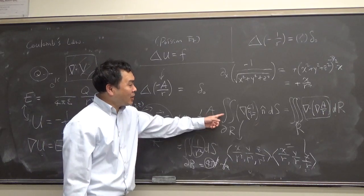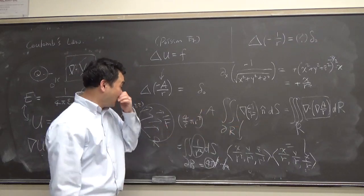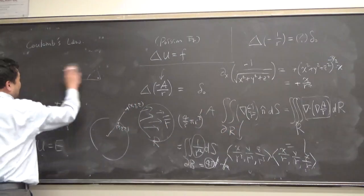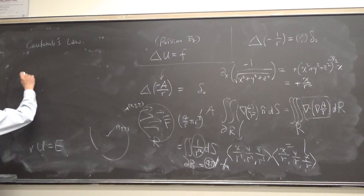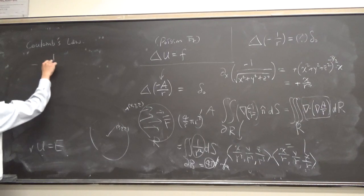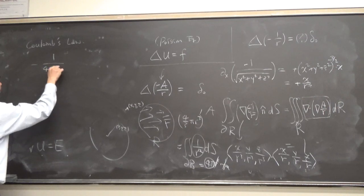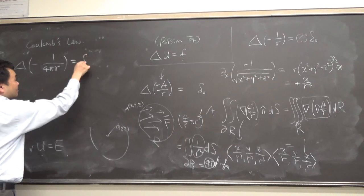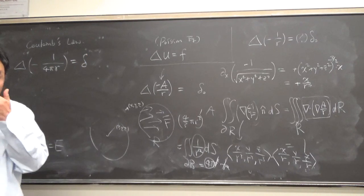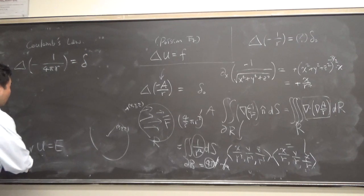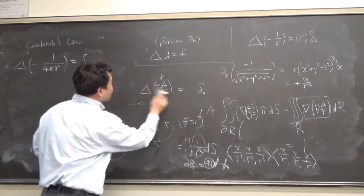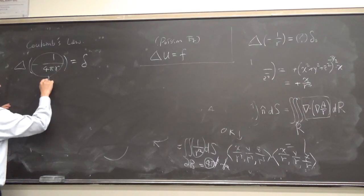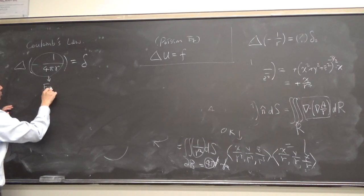So a times 4π has to equal 1, meaning a must be 1 over 4π. All this calculation gives us the important identity: the Laplacian of negative 1 over 4π r equals the delta function. This is called the fundamental solution.